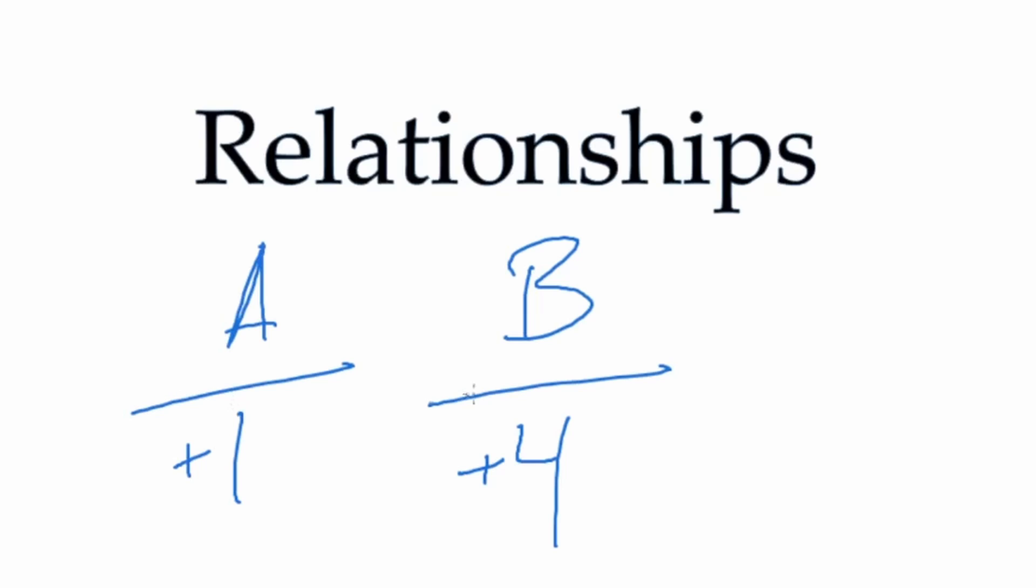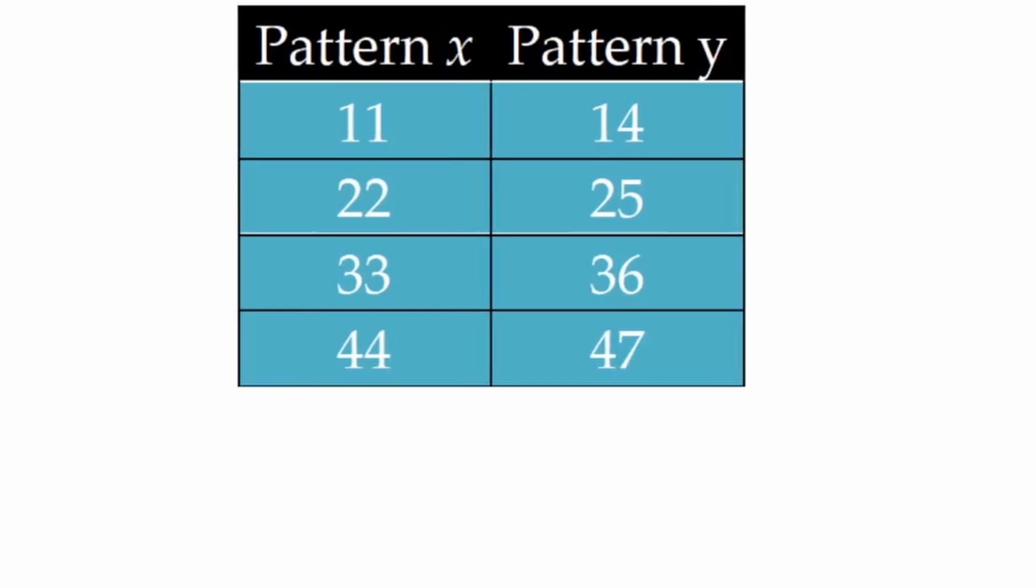And we're comparing the two to see what their connection or relationship is. Pattern A is increasing by one. Pattern B is increasing by four. So we can talk about these two connections like this. Pattern B is increasing four times as fast as pattern A. How did I get that? Well, it's increasing by four instead of by one. And the relationship between four and one is that four is four times greater.